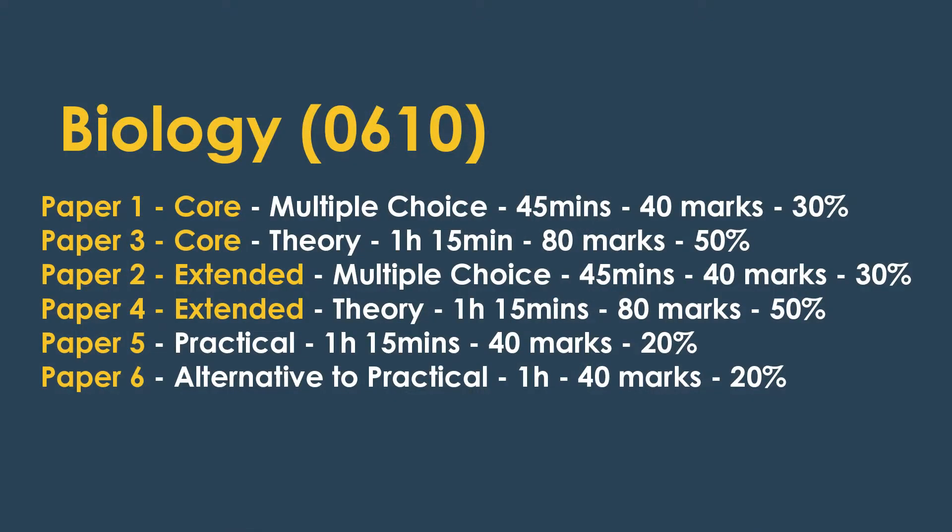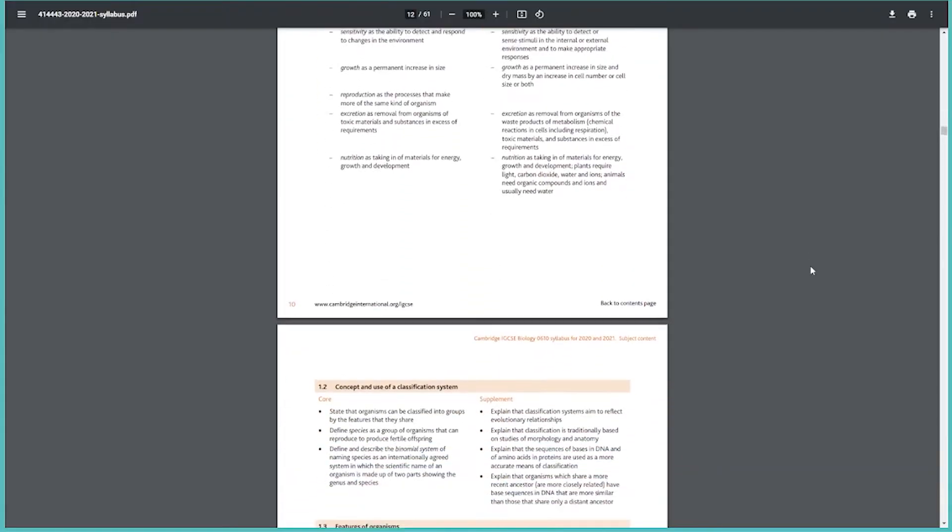IGCSE Biology is a subject I had to speed run because I only had a few weeks to complete all the classes and get ready to write the exams, so I'm well versed in getting large amounts of information to stick. For core students: paper one and paper three; for extended: paper two and paper four — both multiple choice and theory — plus either the practical or alternative to practical. I really spent most of my time making flashcards for every definition and concept, then reviewed them a little every day leading up to the exam so I wouldn't forget earlier chapters.